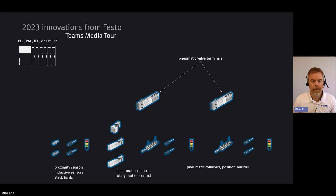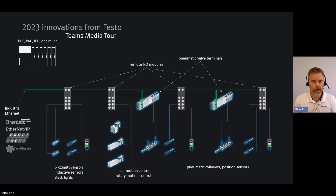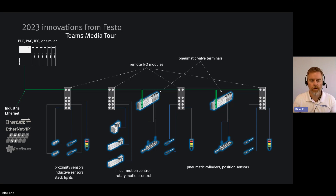Festo is known primarily for our pneumatic valve terminals — that's one of our key product lines. A common solution to connect everything together within a machine is using remote I/O. So with remote I/O modules added, we connect all the sensors, actuators, and pneumatic valve terminals up to the PLC with an industrial Ethernet connection — whether that's EtherCAT, EtherNet/IP, PROFINET, or Modbus. These are the main industrial Ethernet protocols we see in the world today.